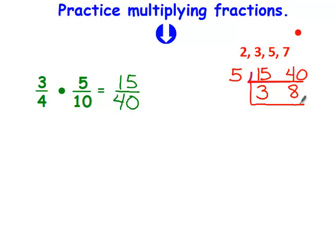2 does not go into both 3 and 8. 3 goes into 3, but not 8. And 5 and 7 are bigger than the magic numbers. So this problem simplifies to 3 eighths. That's the answer.